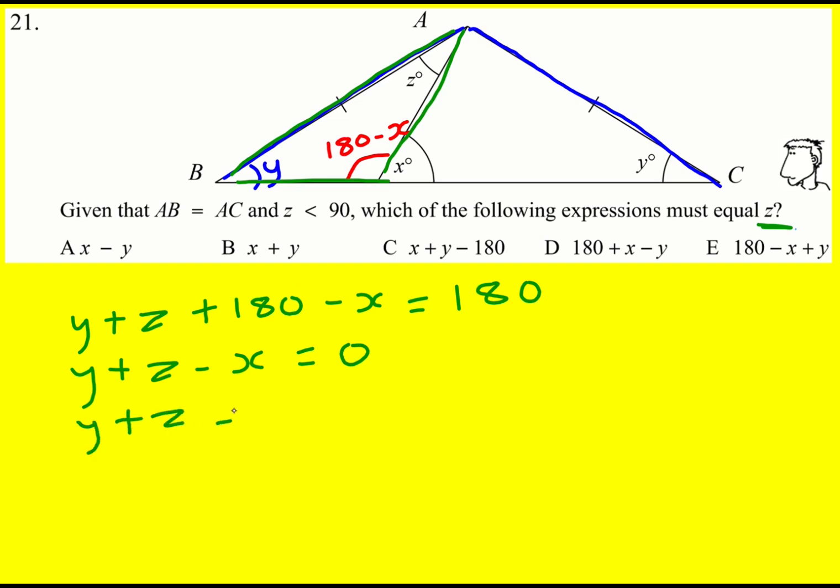So Y plus Z is going to equal X. This is me adding X to both sides. Then minus Y, leaving me Z must equal X minus Y.